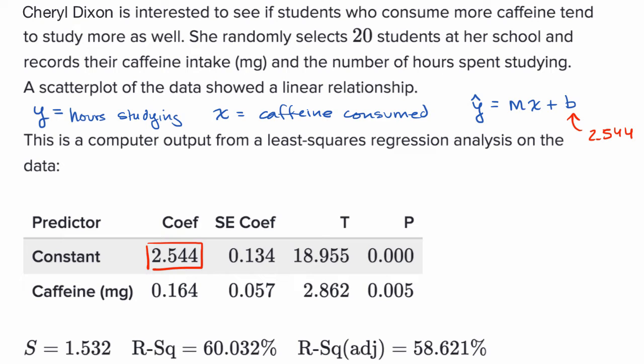And then the coefficient on the caffeine. Well, we just said that x is the caffeine consumed. So this is that coefficient, 0.164.